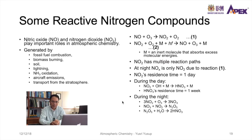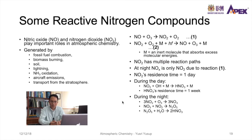Some main reactions of NO and NO₂: nitrogen oxide reacts with ozone to form nitrogen dioxide and oxygen gas, while nitrogen dioxide reacts further with oxygen gas and an inert molecule M — which absorbs excess molecular energy — under sunlight to reproduce nitrogen oxide, forming a null cycle with ozone.